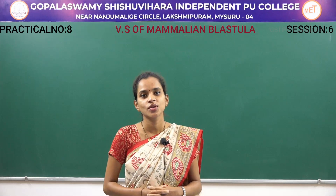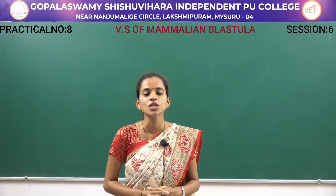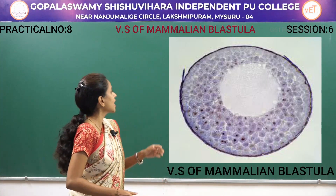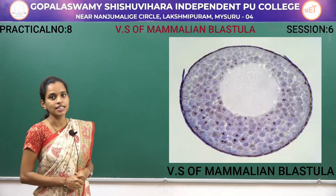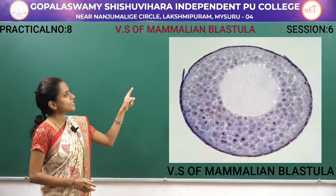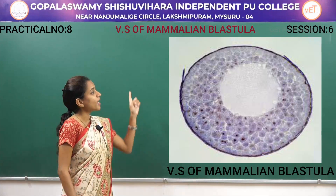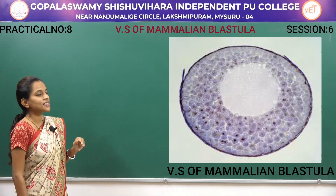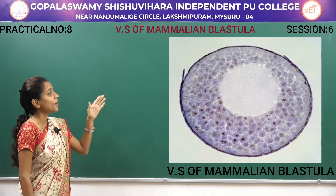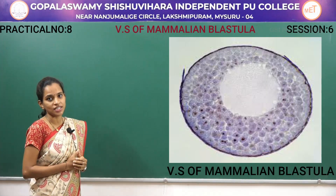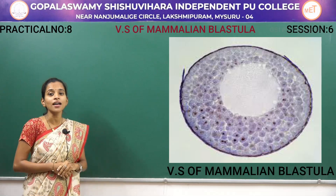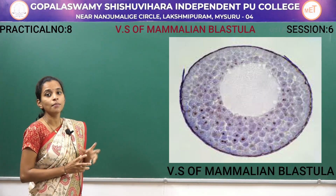Hello students, welcome to your second PUC biology practical session. In today's session we will be learning about the VS of blastula in case of mammals. On the screen you can see the typical VS of mammalian blastula. The individual cells are called blastomeres. These blastomeres are covered with trophoblast. This trophoblast has an outer covering called zona pellucida, and the blastula is divided into two different regions.